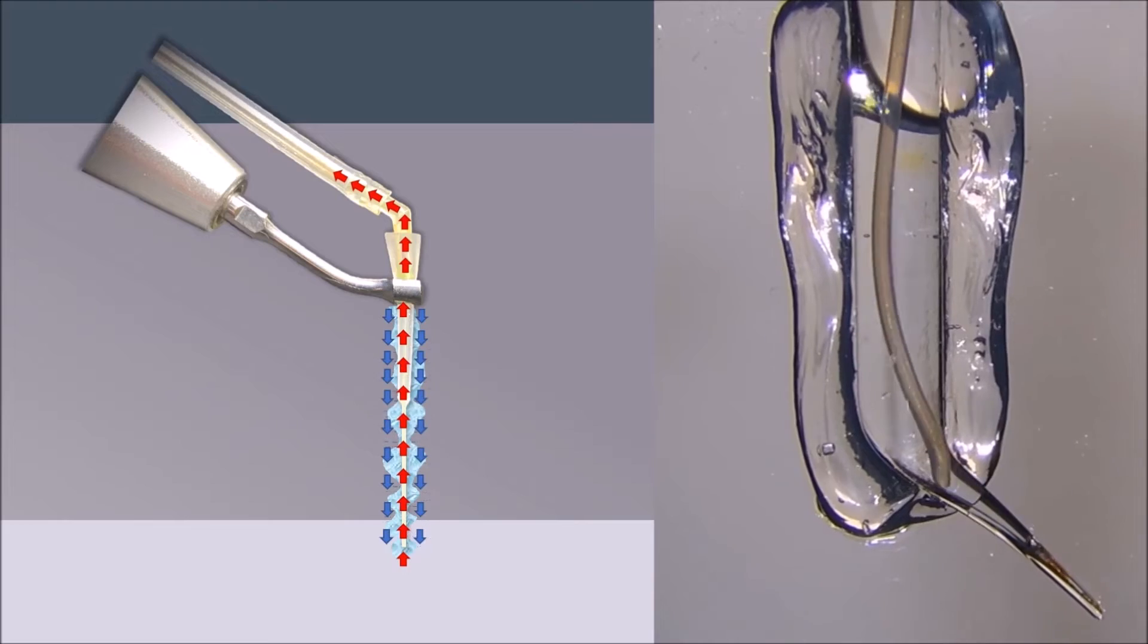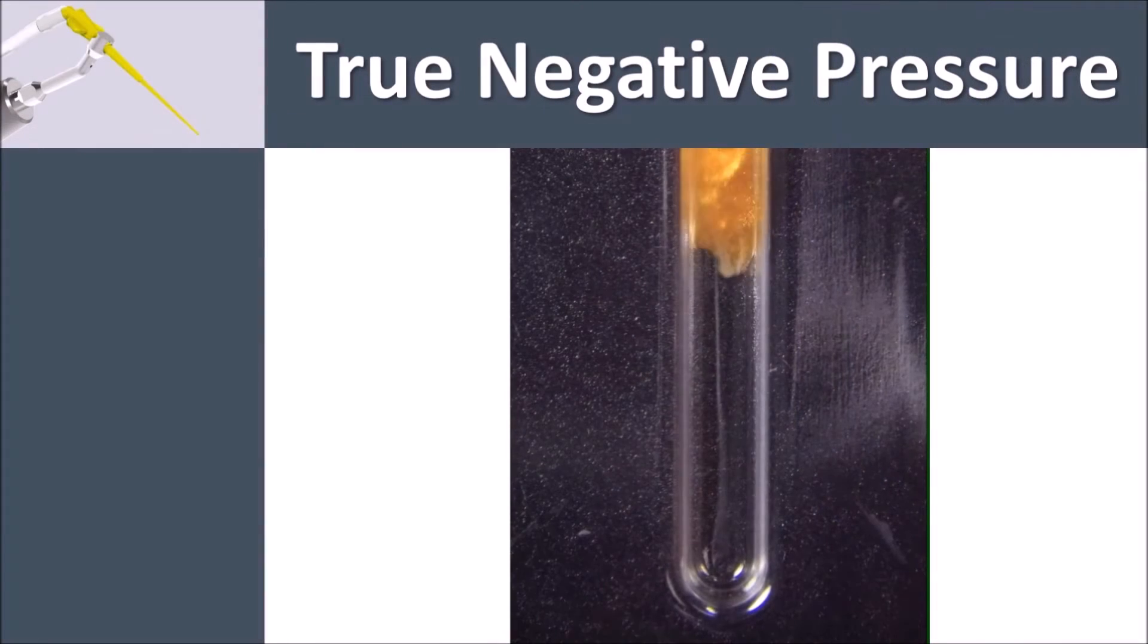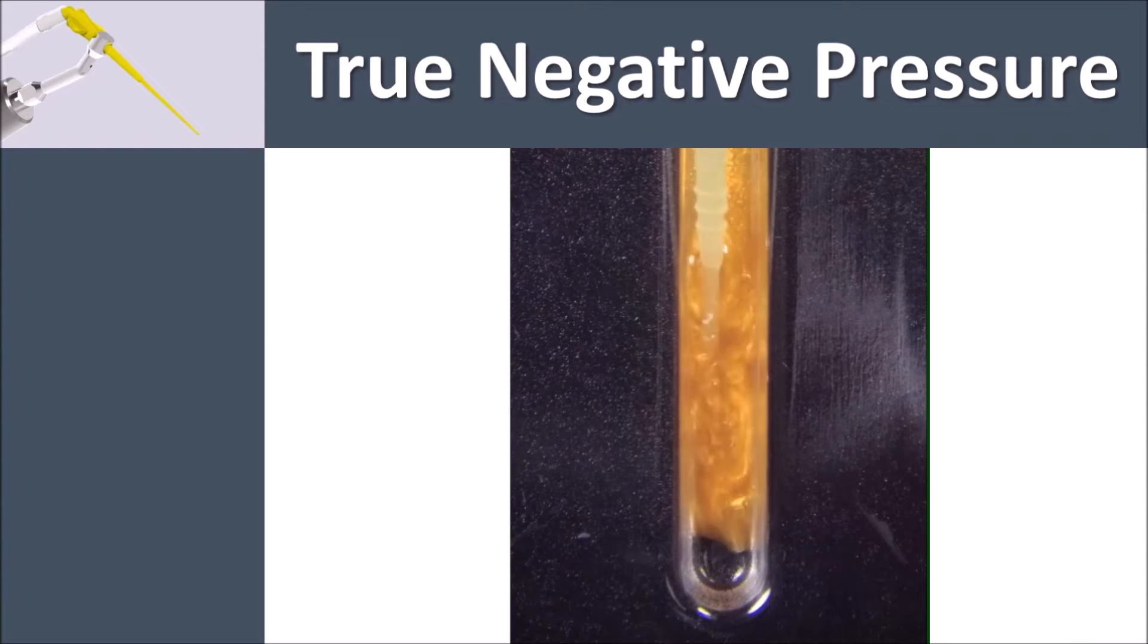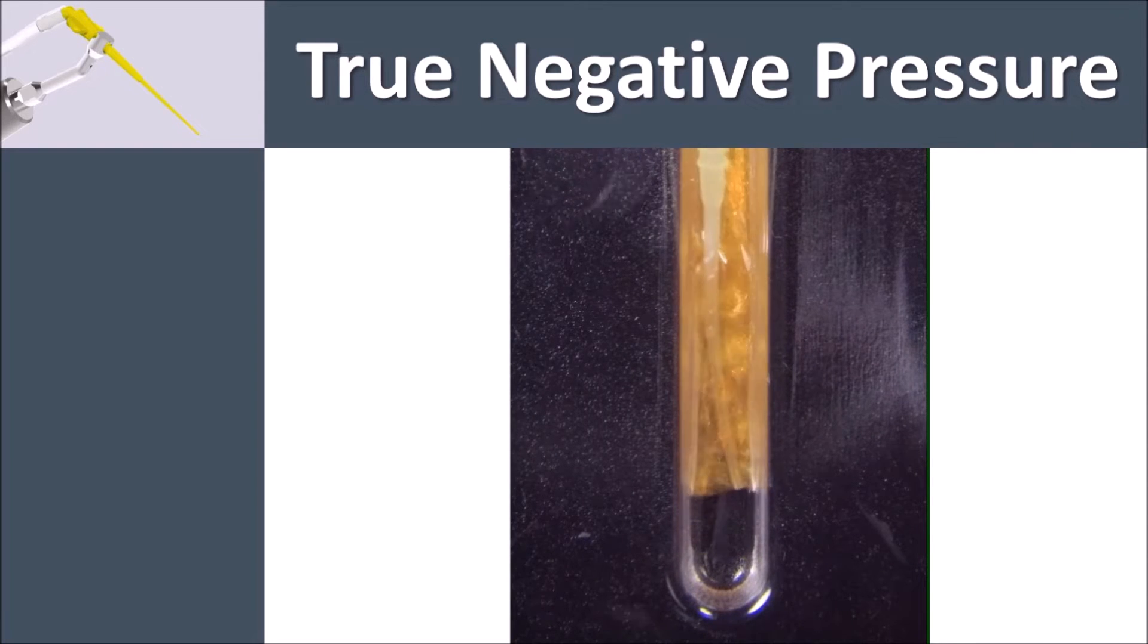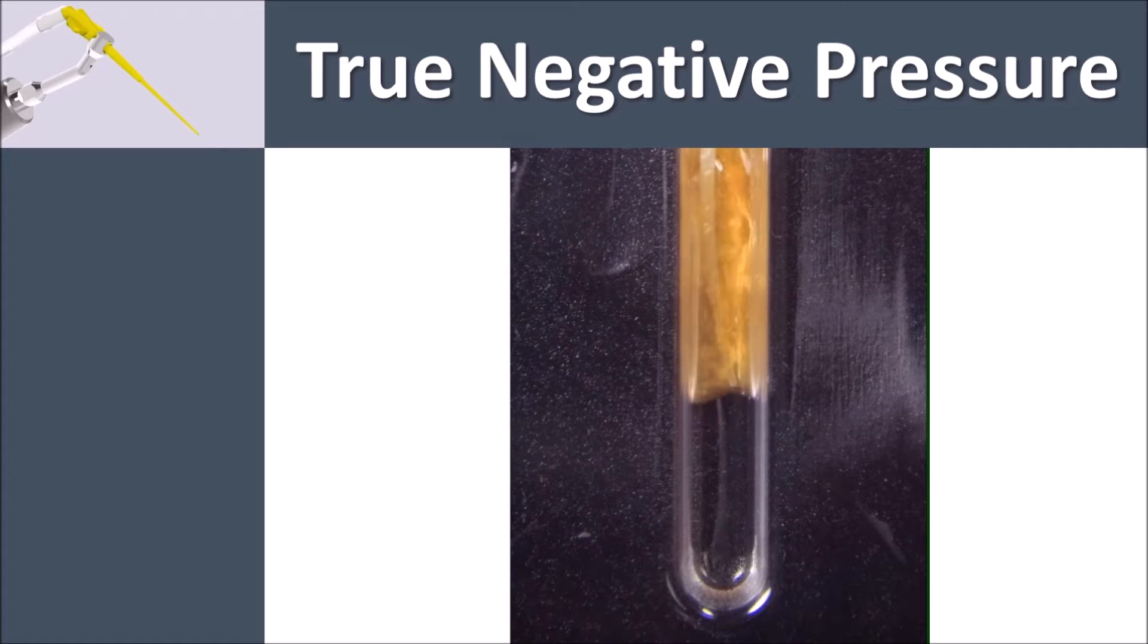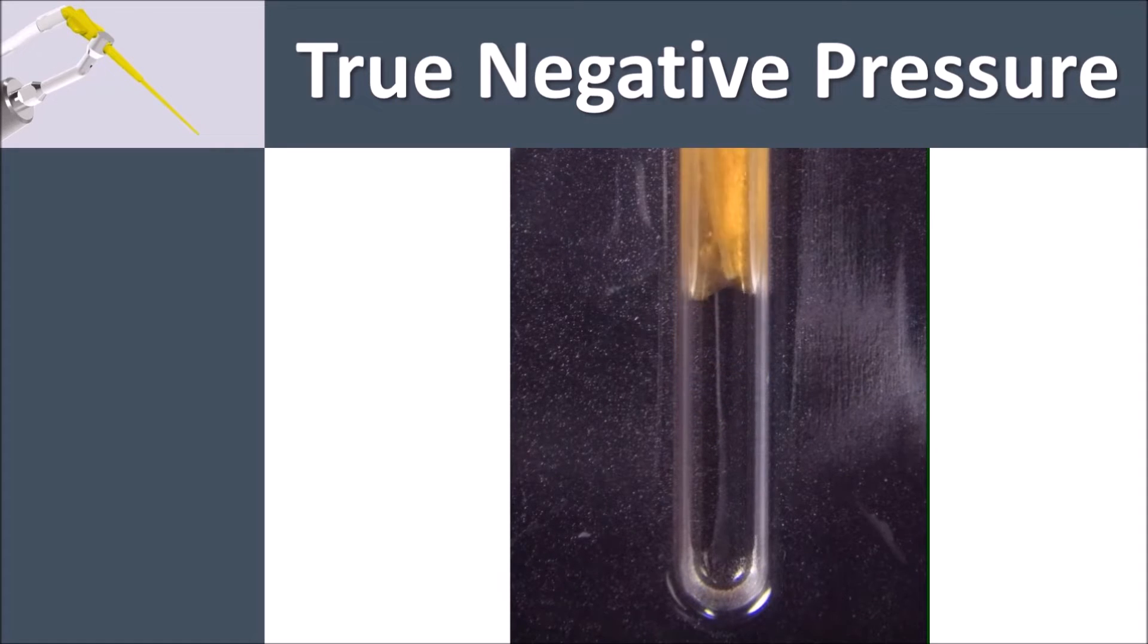The iVac is a true negative pressure irrigation system. The fluid level inside the canal is controlled by the apical position of the iVac cannula. The negative pressure irrigation determines controlled irrigate flush, avoiding apical extrusion of the liquid.